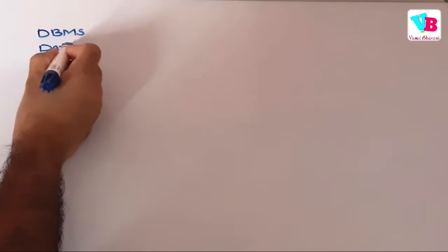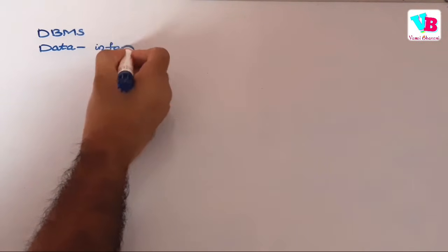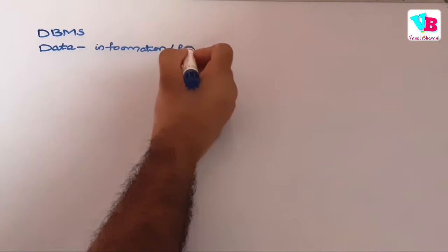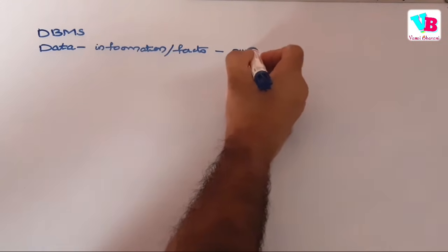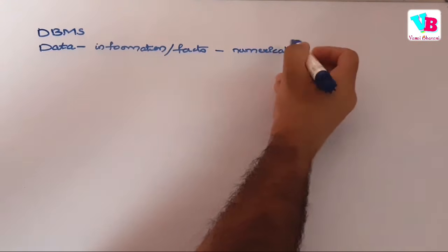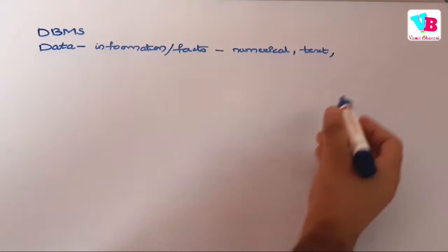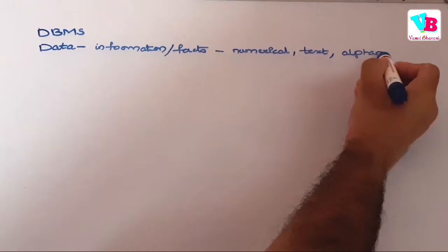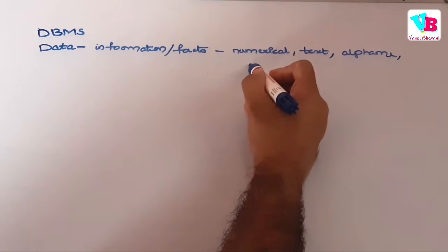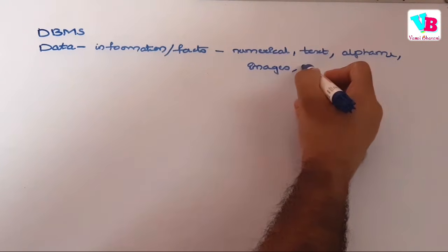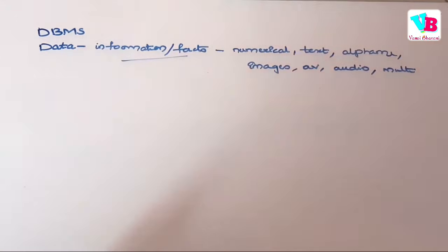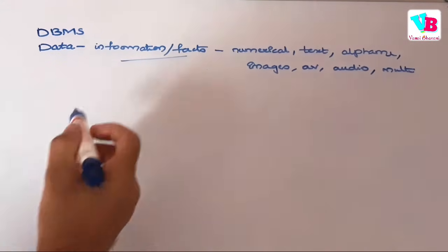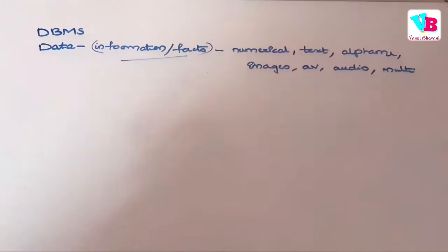First, data is nothing but information, or facts and matter. Data is just information or facts. It can be in any type — it can be numerical, it can be in text format, it can be alphanumerical, and even data can be in the format of images, audio-visual, audio, or multimedia. Whatever information we store and record is called data.